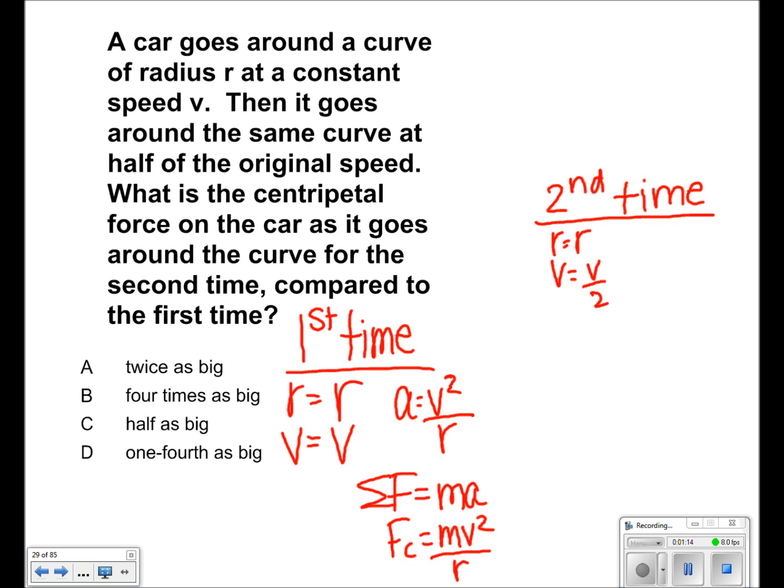So acceleration equals velocity squared over r, and plugging in our new values, we get acceleration is equal to v over 2 squared divided by r. So it is equal to v squared over 4r.